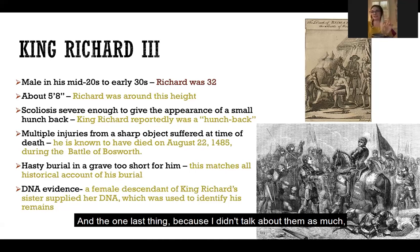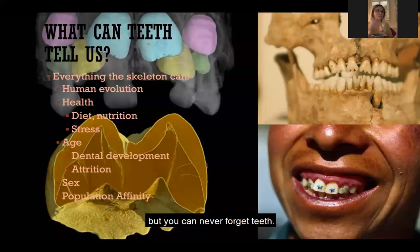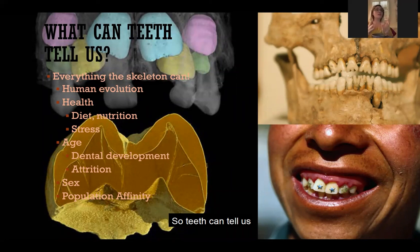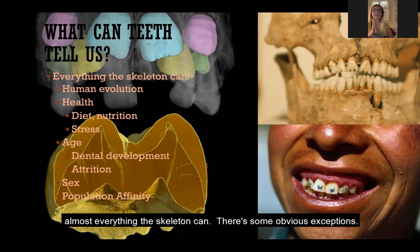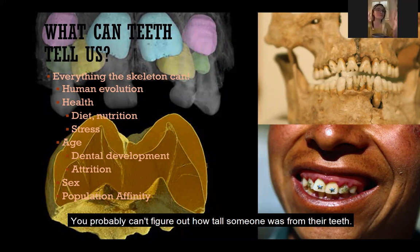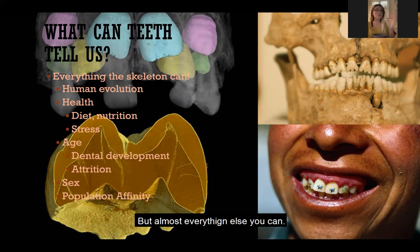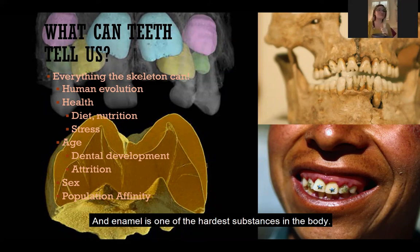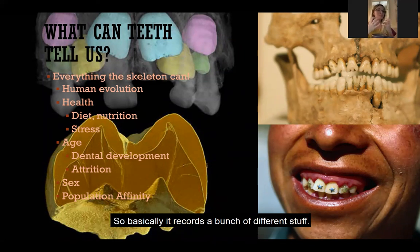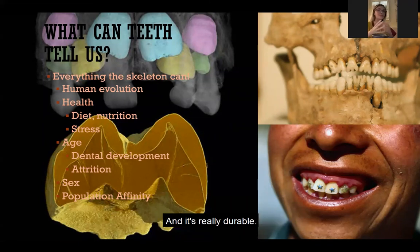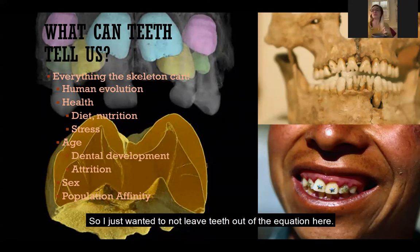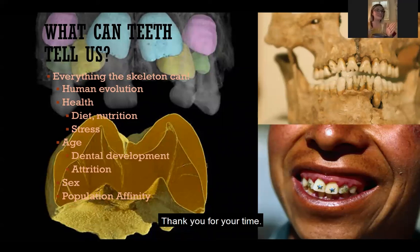One last thing — you can never forget teeth. Teeth can tell us almost everything that skeletons can, with some obvious exceptions like stature. Enamel is one of the hardest substances in the body, so it records a bunch of different information and is really durable. Thank you for your time.